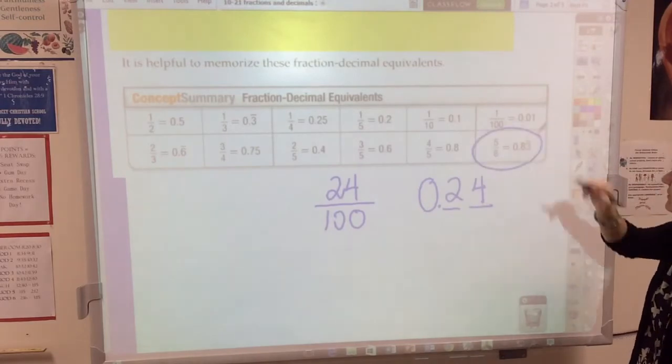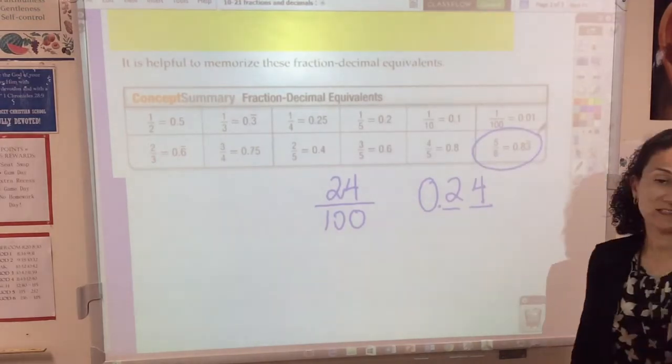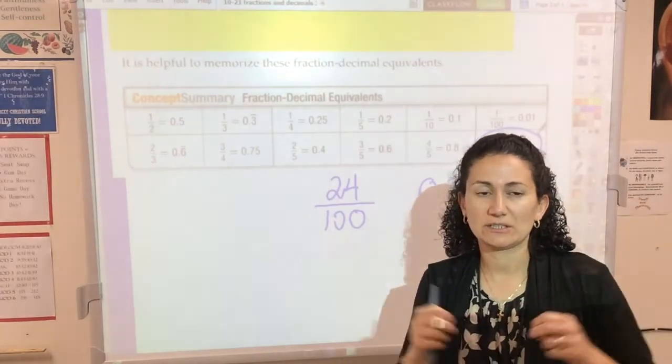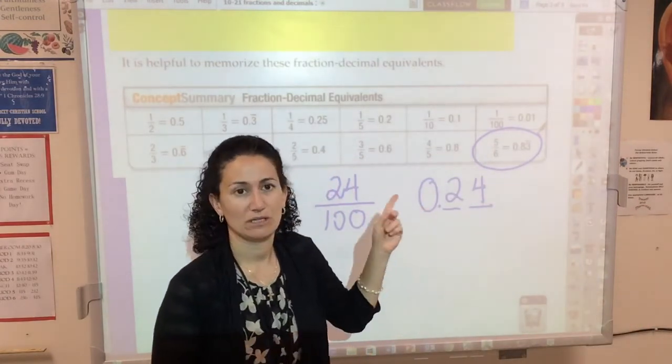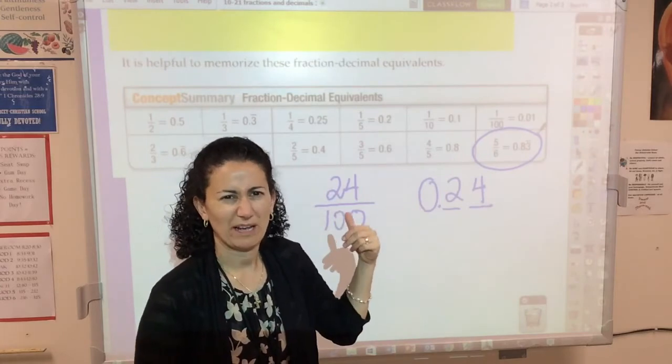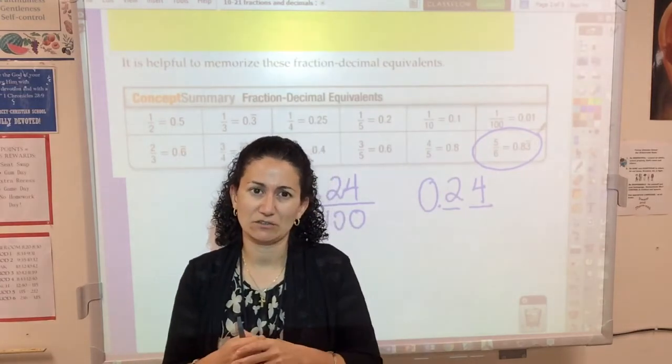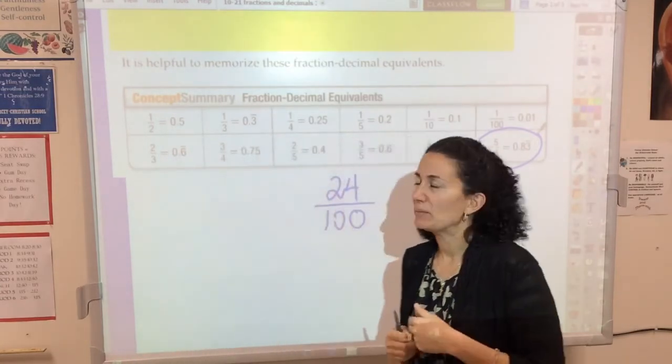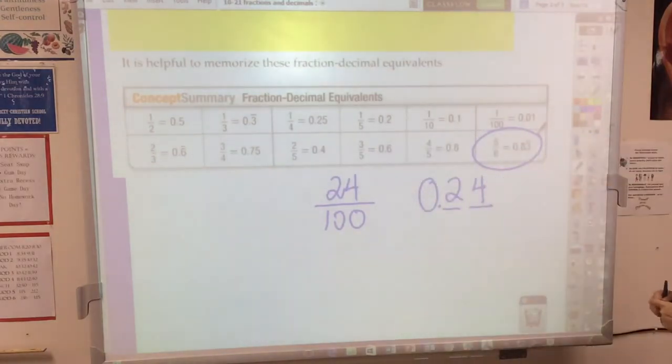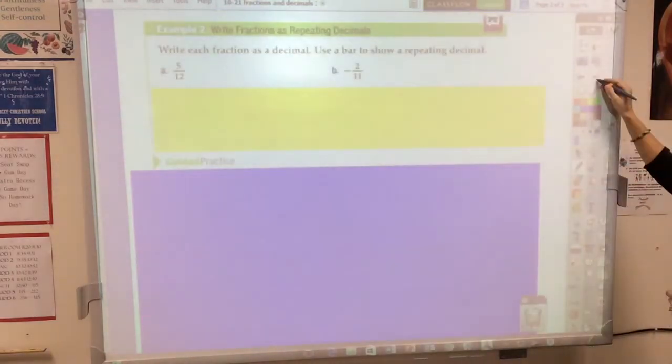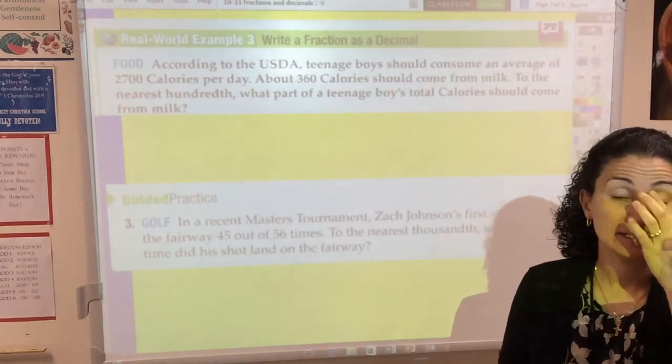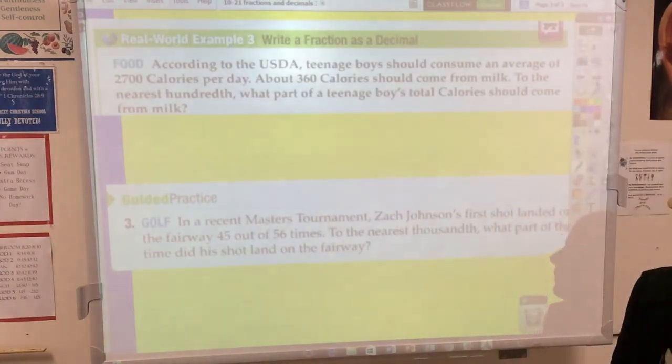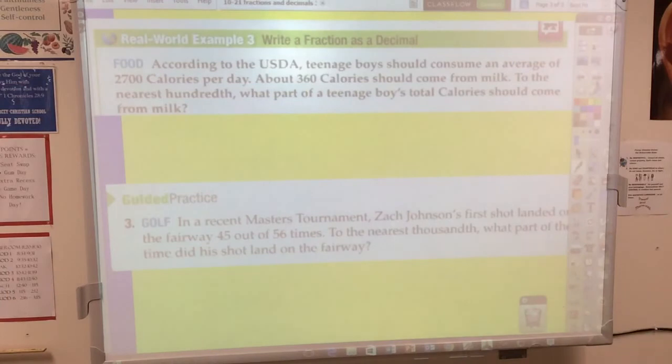Okay, there's one we didn't talk about: 5/6. I don't think this is necessarily an easy fraction. Certainly memorize it if you can. 5/6 is 0.83333. I wouldn't have added that to an easy list of fractions to memorize, but it's there so you can memorize it if you want to. I want to finish with two real life examples for you of when you might want to convert fractions to decimals.